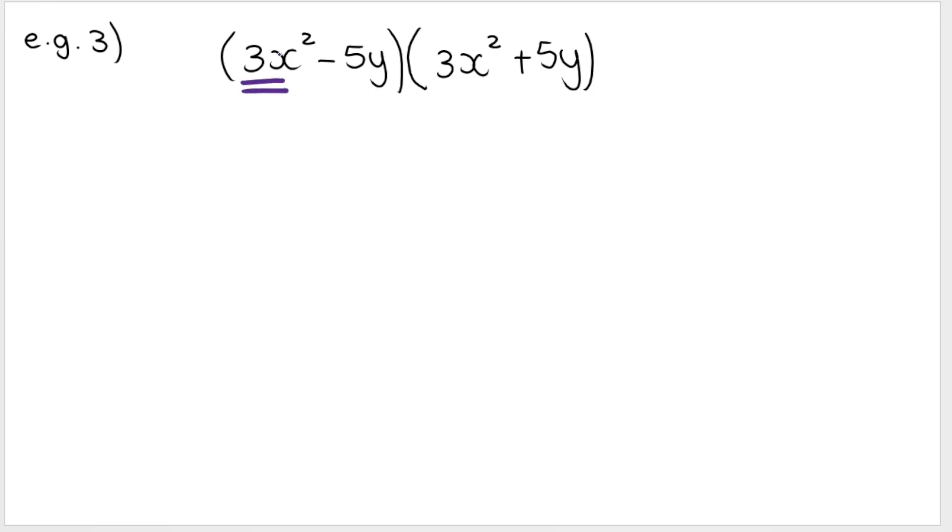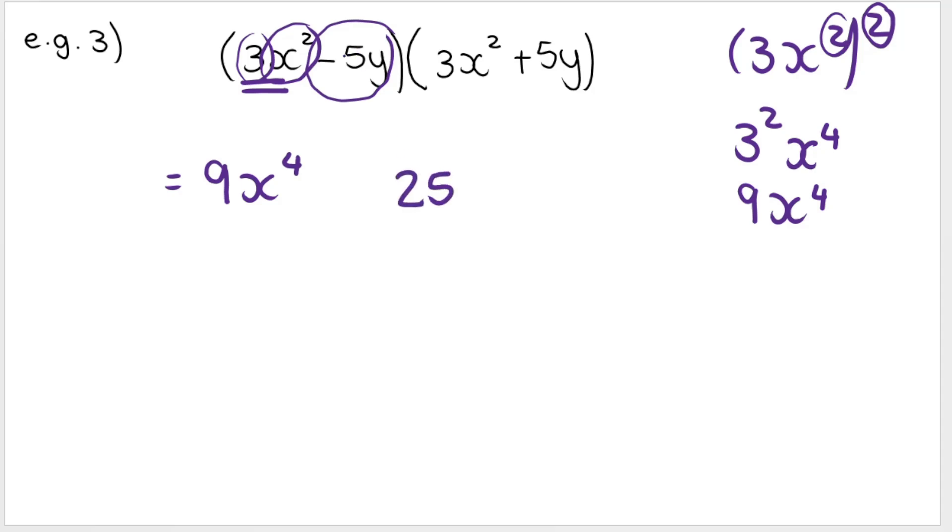So this one, square the first term. So three squared is nine and x squared is x to the power of four. If you need to do it on the side of your page to help you, please do it. So it's three to the power of two and x to the power of four because it's power inside times power outside. So nine x to the power of four. So square the first term, square the last term. So five squared is 25 and then y squared and put a minus in between. Easy as that.